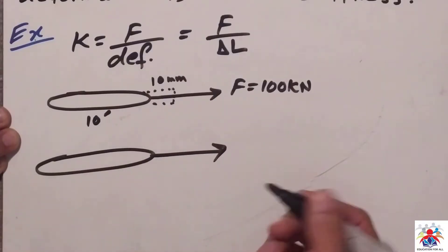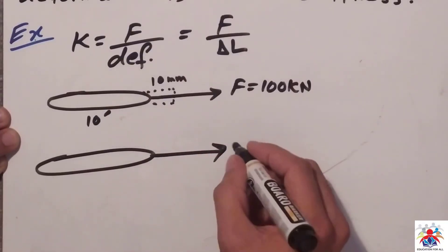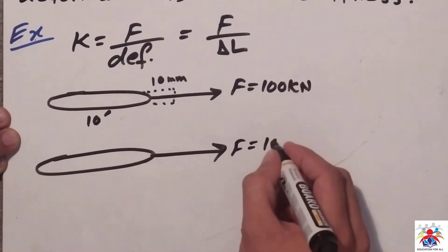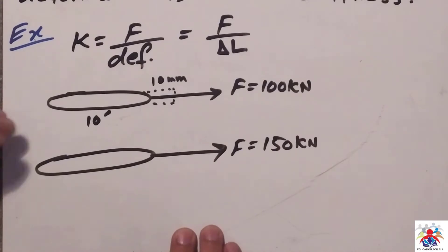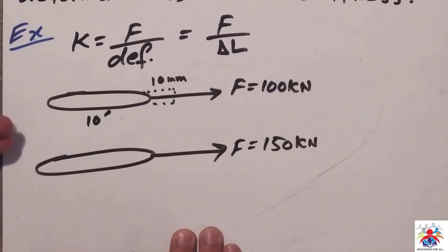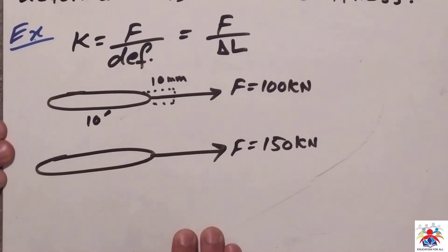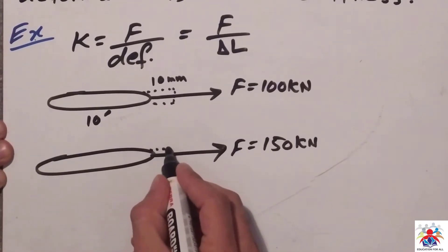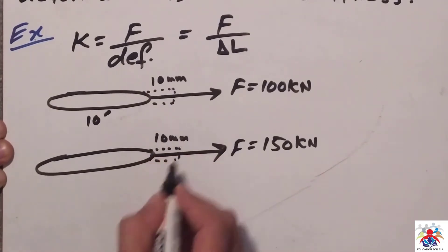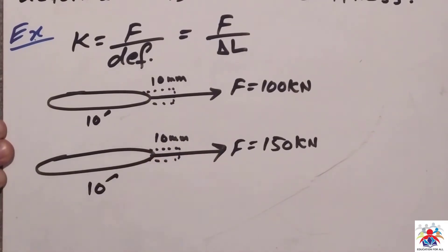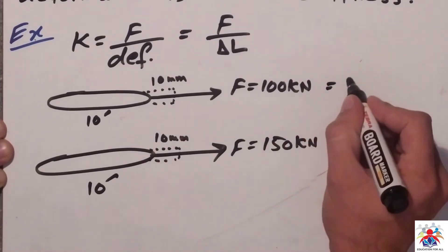We have another rod with another force applied — 150 kilonewtons — also with a deformation of 10 millimeters, and also 10 feet in length. The purpose of these two problems is to show you which material is more stiff.